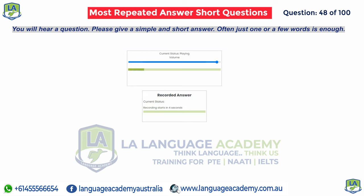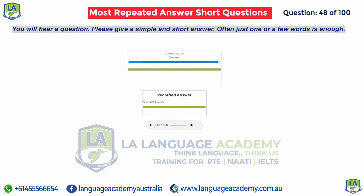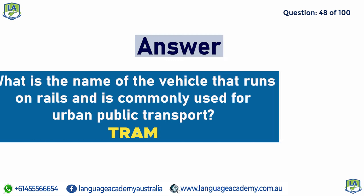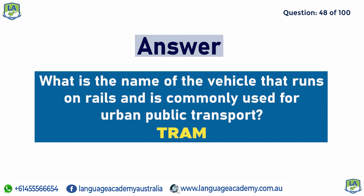What is the name of the vehicle that runs on rails and is commonly used for urban public transport? Tram.